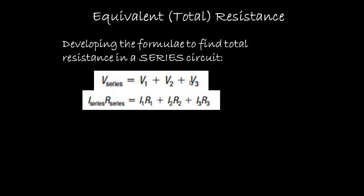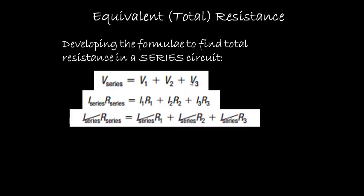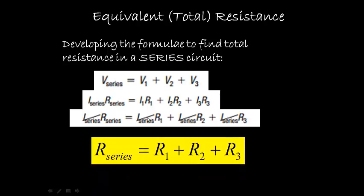Now we use Ohm's law to replace voltage with current times resistance value. Now in a series circuit, remember there are no junctions. So the current doesn't split off anywhere. It's the same everywhere. So you can see here, we've said the current is the same. Let's just divide both sides of our equation by it. And we end up with our formula. The total resistance for a series circuit will just be the sum of all the individual resistor values.